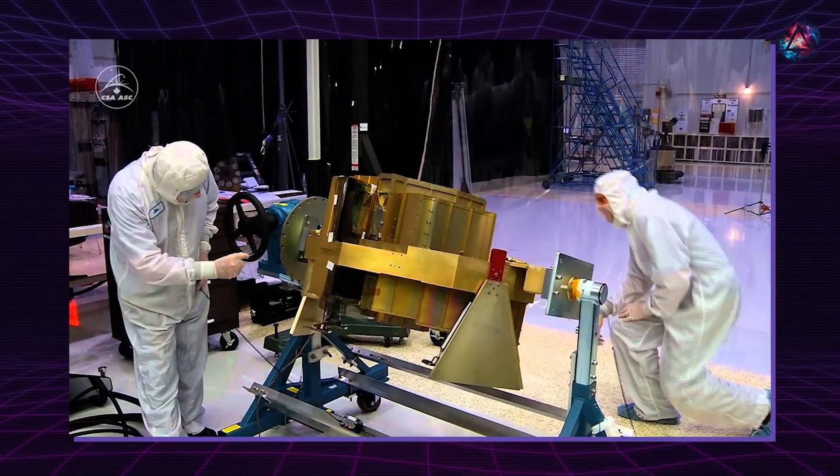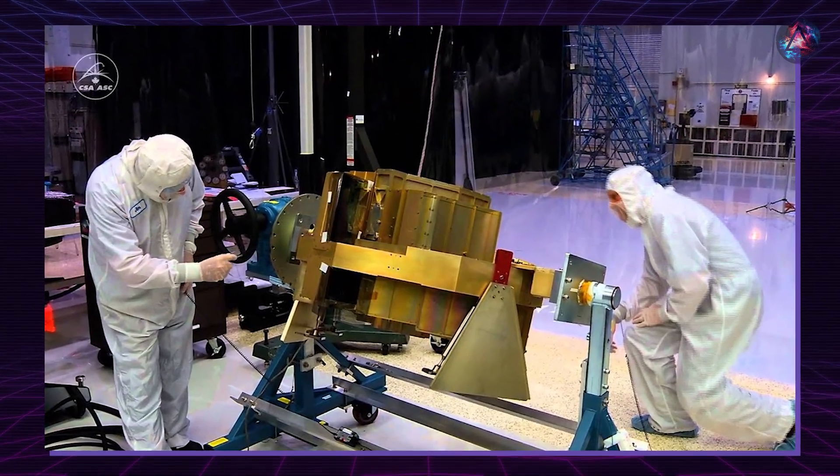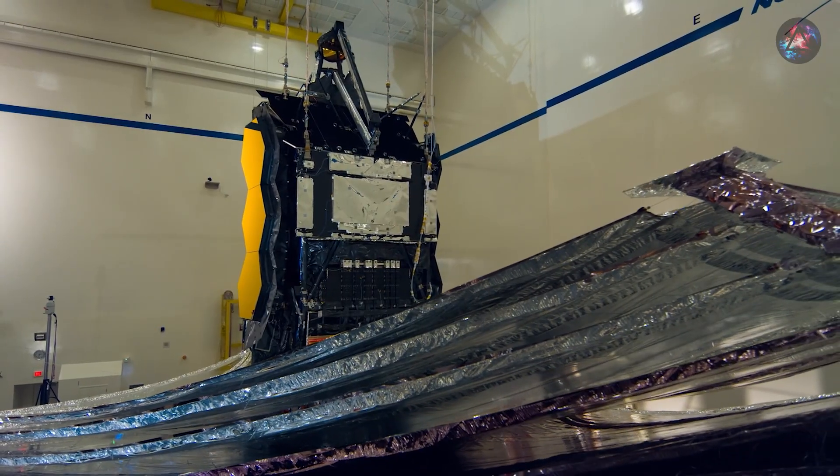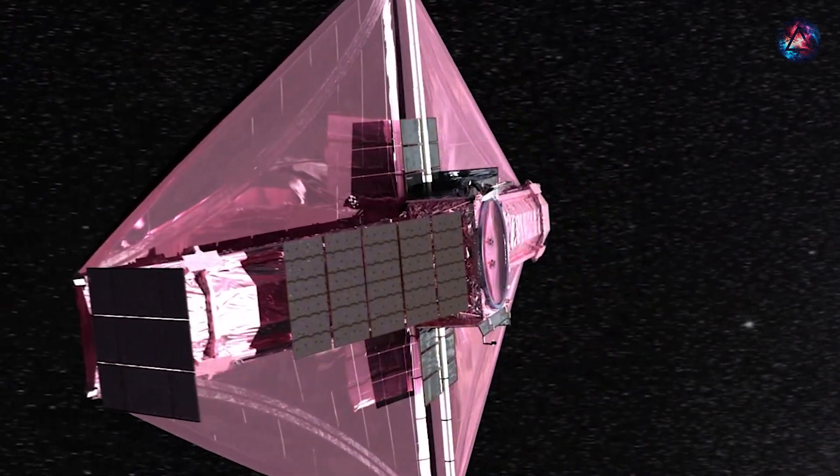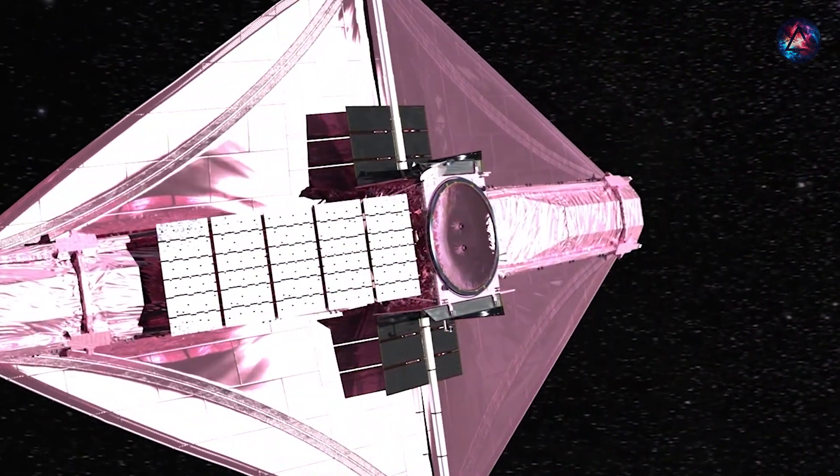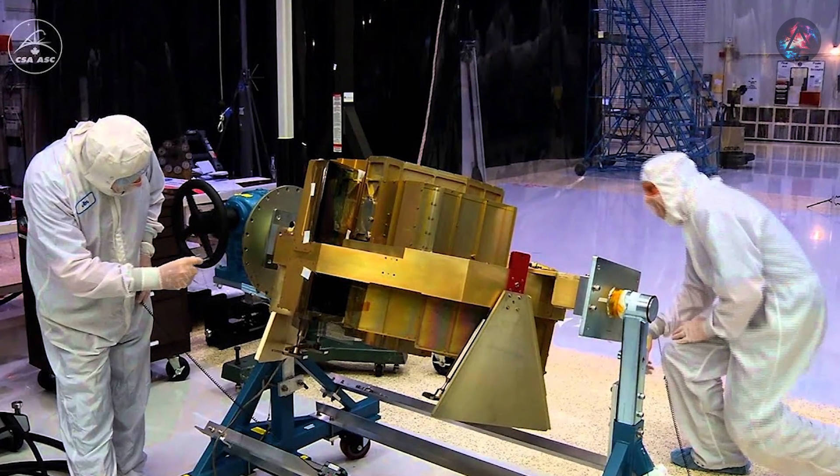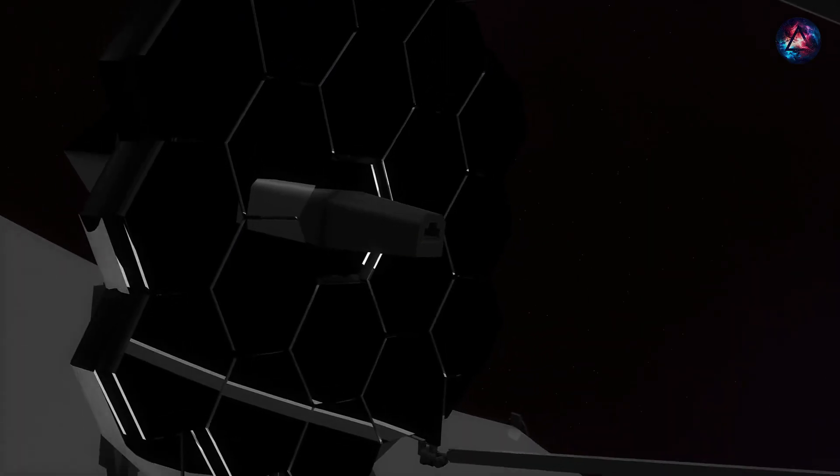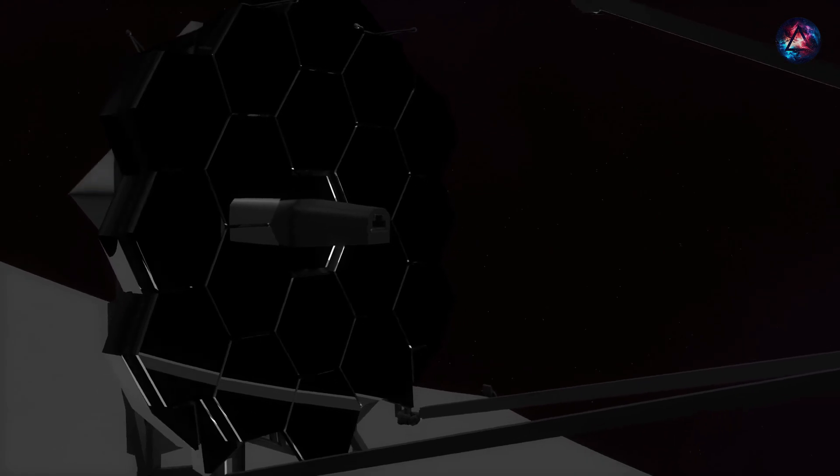Additionally, the Fine Guidance Sensor, FGS, Near Infrared Imager, NIRRI, and Slitless Spectrograph, NIS, play pivotal roles in precisely pointing and tracking celestial objects. The FGS, sensitive to near-infrared light, ensures accurate alignment of the telescope with its target objects in space.